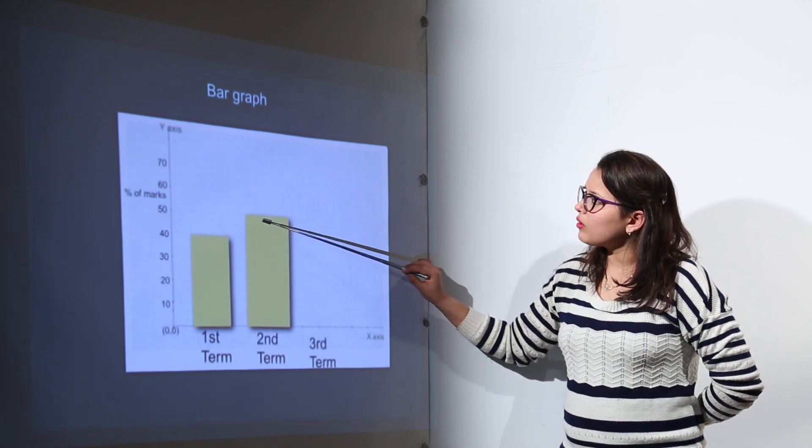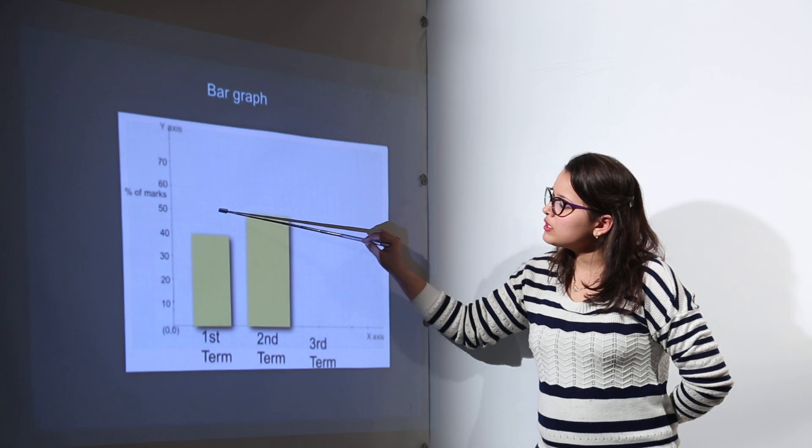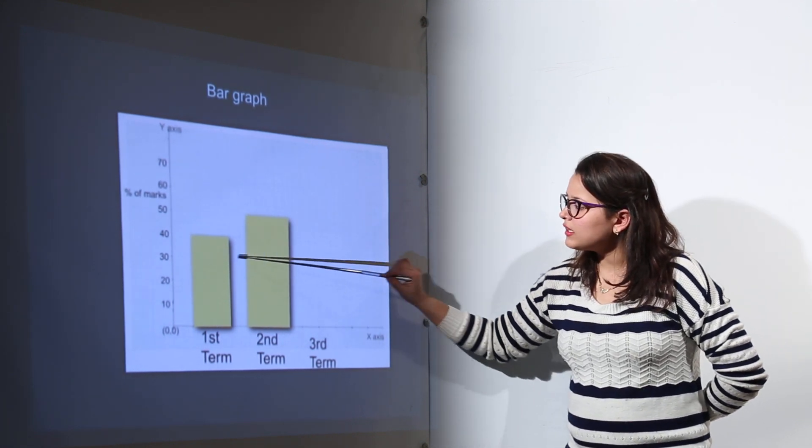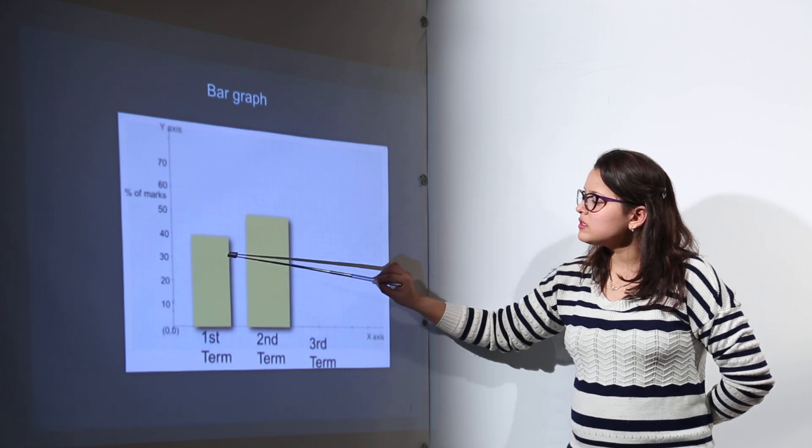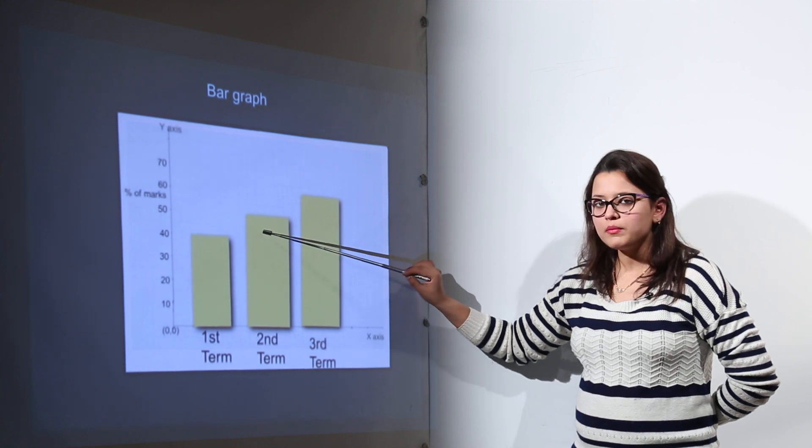So the graph that you will draw, the bar that you are going to draw for second term will be up to the 50% mark. Here you can clearly identify that in the first term the student was securing lesser marks while in the second term the student upgraded.